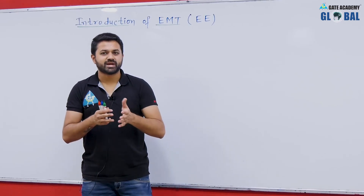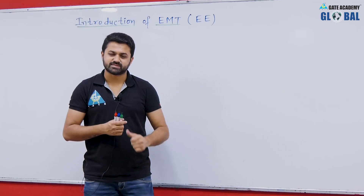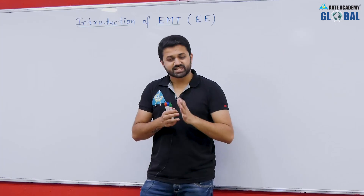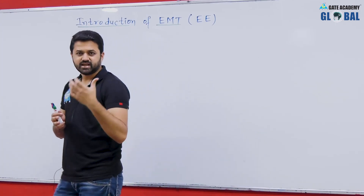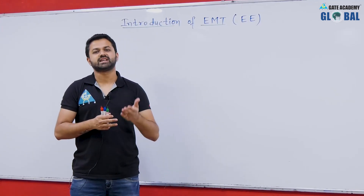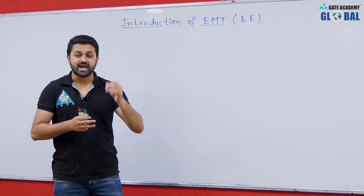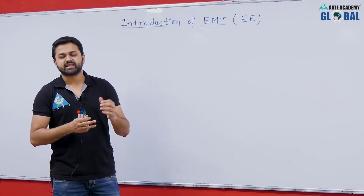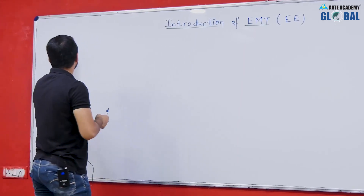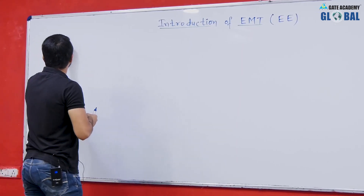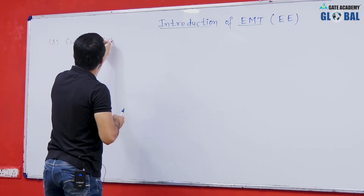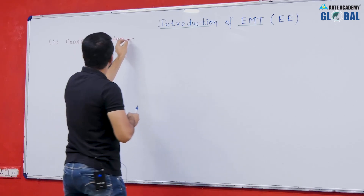Let us see what are the different topics we are going to cover in Electromagnetics. There are 3 particular chapters in this subject. Electromagnetics is divided into 3 parts: the first one is the coordinate system and the del operator, the second one is electrostatics, and the third one is magnetostatics. Let us start with the first — coordinate system and del operator.